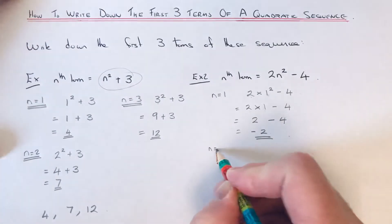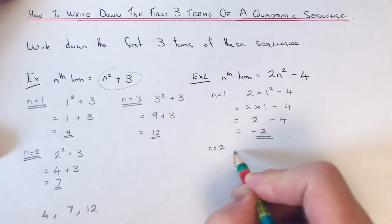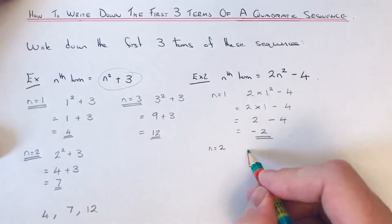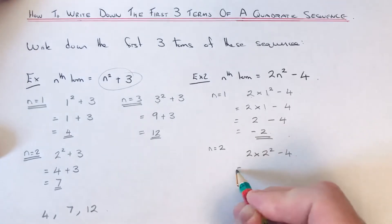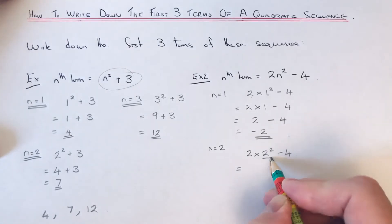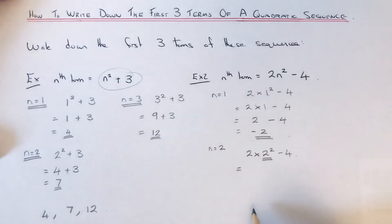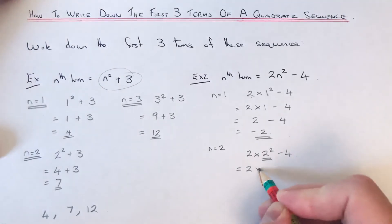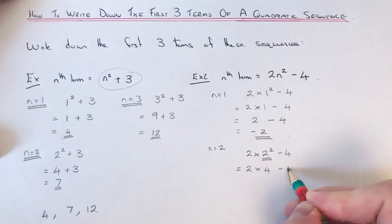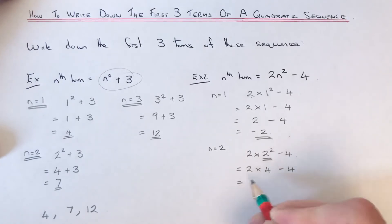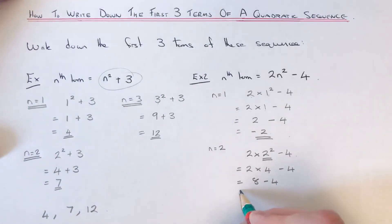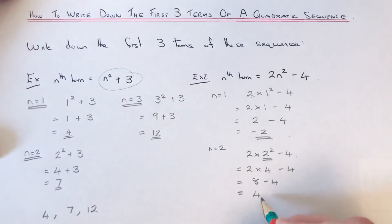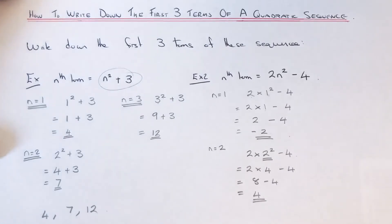To get our second term we substitute n equals 2. So this time it will be 2 times 2 squared take away 4. We need to work out the squared part first — 2 squared is 4. So it will be 2 times 4 take away 4. 2 times 4 is 8, minus the 4 gives an answer of 4. So 4 is our second term.